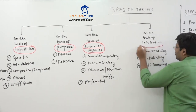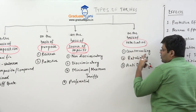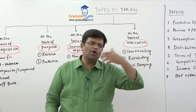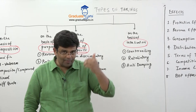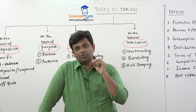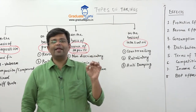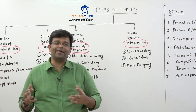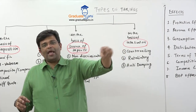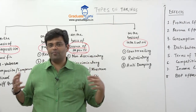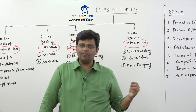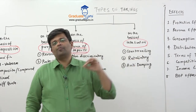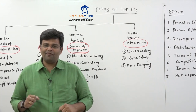The fourth classification is on the basis of retaliation. Retaliation means a reaction is given. The first type is countervailing duty: when other countries give subsidies to their exporters, making those goods very cheap when imported into our country, we impose a countervailing duty to level the playing field. Retaliatory tariff is a direct reaction — if a country imposes tariffs on our goods, we impose tariffs on their goods in return. For example, India imposed tariffs on certain US goods, so the US retaliated by imposing tariffs on certain Indian goods.